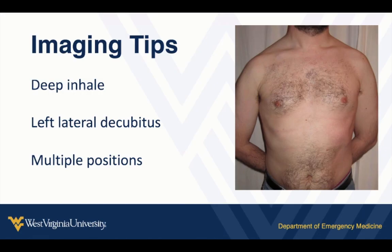A few imaging tips: the number one piece of advice when imaging the gallbladder is to have the patient take a deep breath — that pushes the gallbladder out from under the rib cage and makes it easier to find. Sometimes turning the patient on their left side also helps. If difficult, try imaging from a few different positions: start at the mid-clavicular line just under the costal margin, move up between the ribs, or image through the liver and kidney to identify the gallbladder.